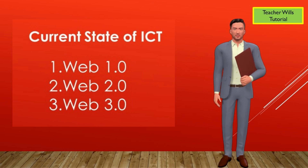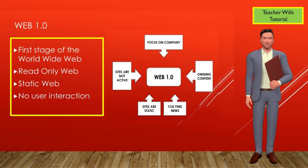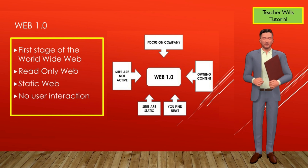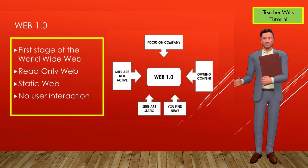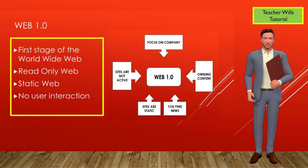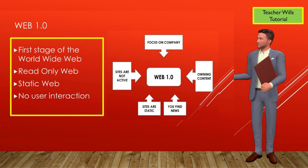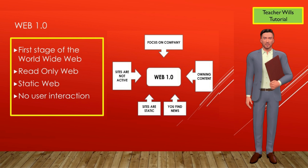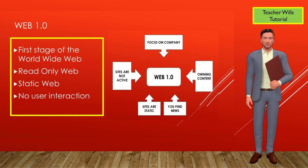Let us explore the meaning and differences of the three current states of ICT. Web 1.0 is a term coined to differentiate the first stage of the World Wide Web from the present stage of internet technology. At the beginning of the WWW, there were few web content creators, and it was considered a read-only web since there was no user interaction.